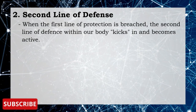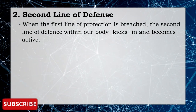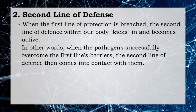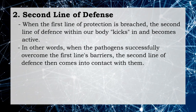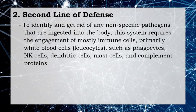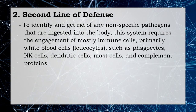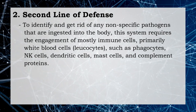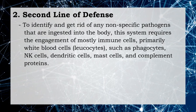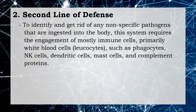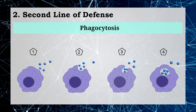When the first line of protection is breached, the second line of defense within our body kicks in and becomes active. When the pathogen successfully overcomes the first line barriers, the second line of defense comes into contact with it to identify and get rid of any non-specific pathogens ingested into the body. This system requires the engagement of mostly immune cells — primarily white blood cells (leukocytes) such as phagocytes, natural killer cells, dendritic cells, mast cells — and complement proteins. Immunological memory doesn't exist here.